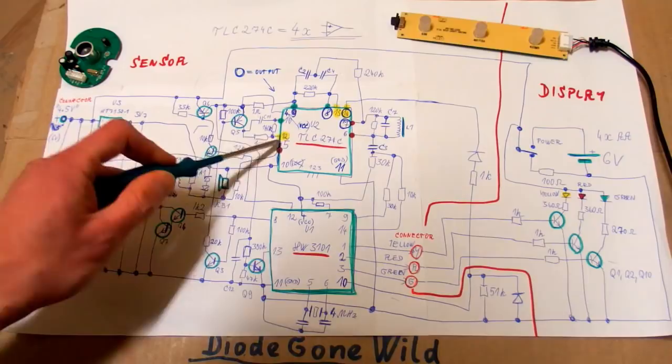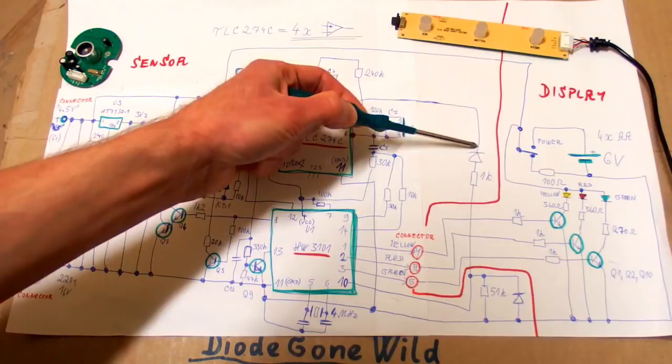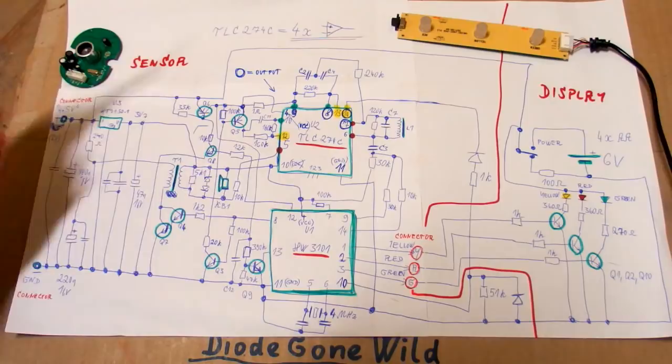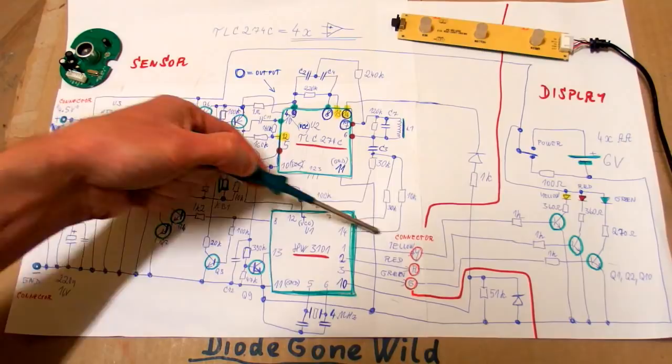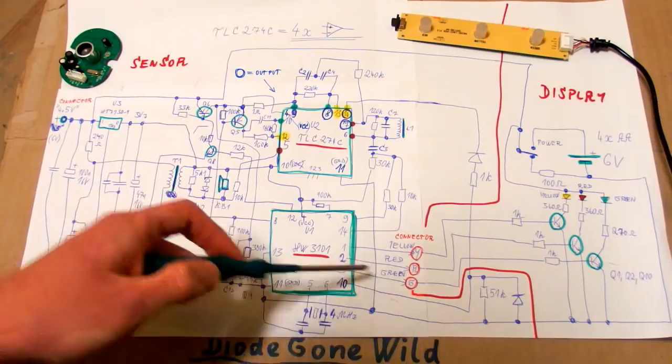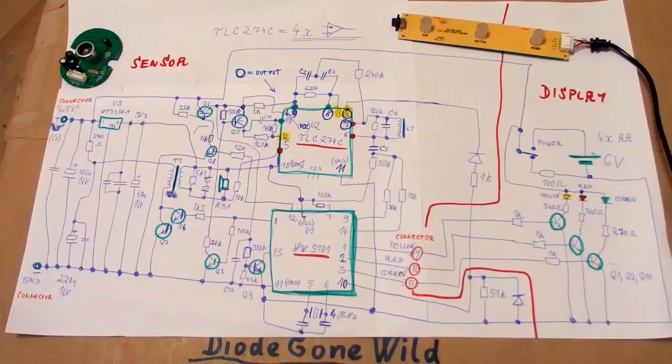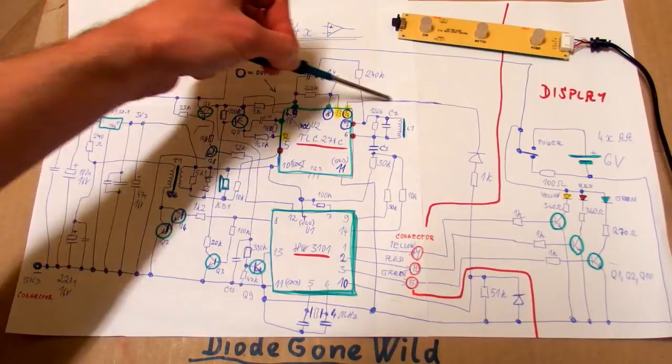And the output goes via a diode and a resistor into the microcontroller. And there are some pins of the microcontroller going into the circuitry via some resistors of different values. So is the microcontroller switching the sensitivity of the receiver or something like this. Maybe. And this pin is probably the main input of the microcontroller. And so when the reflected signal comes back, it probably makes an impulse here and it goes into the microcontroller. And this one will calculate the time and measure the distance.